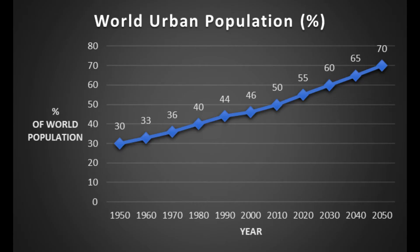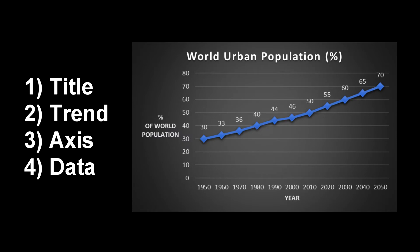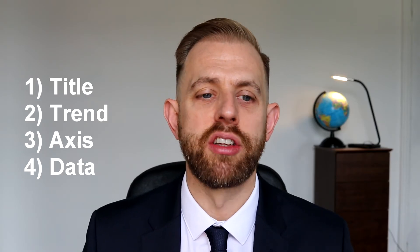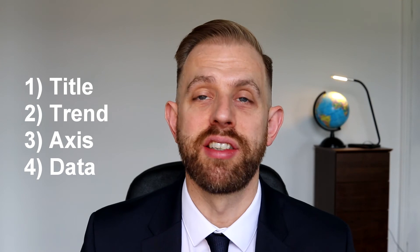When trying to break down a graph in geography, I like to look at these four main points before you actually start. The first thing is the title — what is the actual title of the graph? Then you're looking for a trend, pattern, or relationship: is the data increasing, decreasing, or is it a plateau or fairly consistent throughout the years? You want to check what the axes are telling us, and then reference the actual data and numbers on the graph. So four main points: title, trend, axis, data.